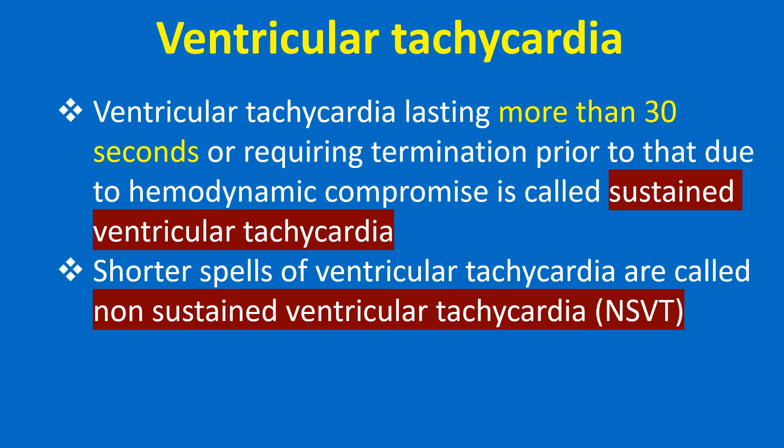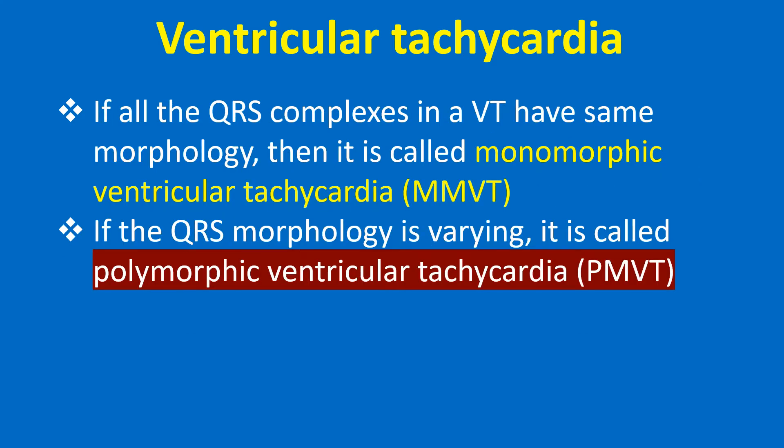Shorter spells of ventricular tachycardia are called non-sustained ventricular tachycardia or NSVT. If all the QRS complexes in a VT have the same morphology, it is called monomorphic ventricular tachycardia. If the QRS morphology is varying, it is called polymorphic ventricular tachycardia.